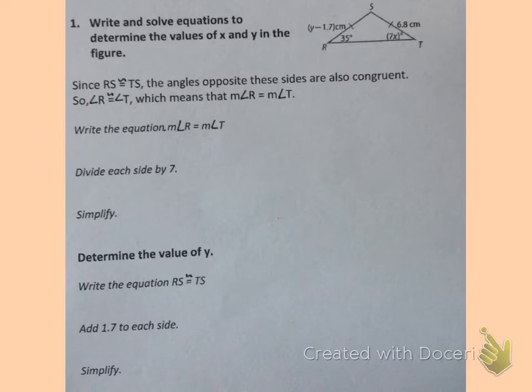We can use this information to help us write and solve equations to determine the values of X and Y in an isosceles triangle. Let's look at this one to the right. We're given the values of two angles and two sides. We need to determine the values of X and Y. X is the value associated with the angles, so let's start there.